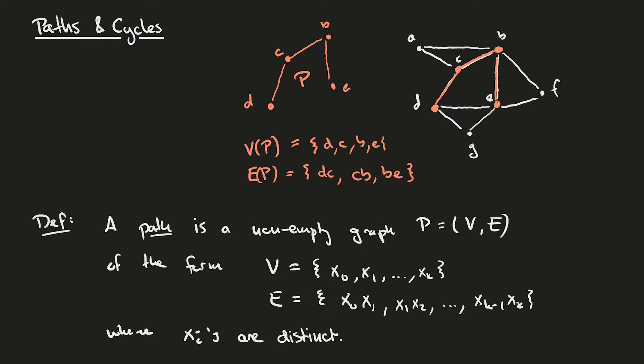We can introduce some language to refer to parts of the path. We call the first and the last vertex in the path its end vertices, and we'll call all other vertices the interior vertices of the path. In our example, D and E would be the end vertices or ends of our path, and we'd have C and B being the interior vertices of our path.